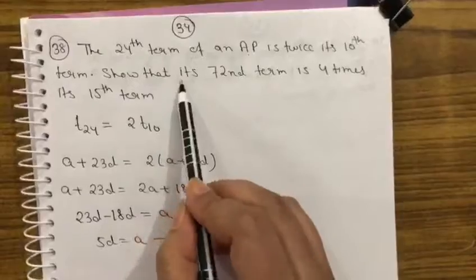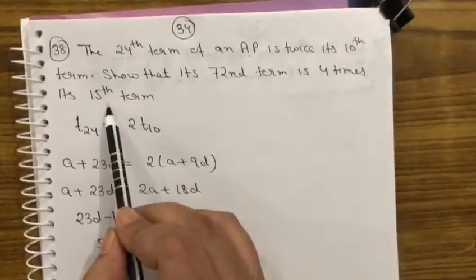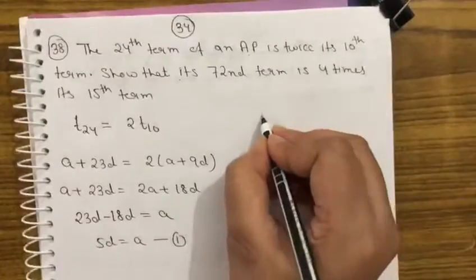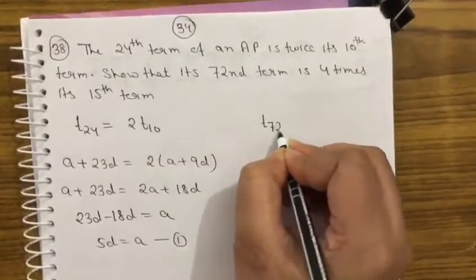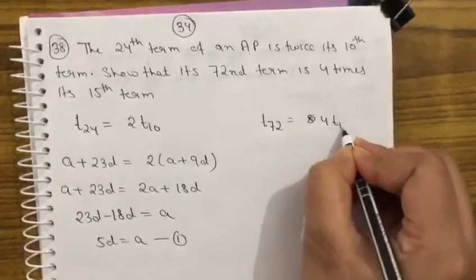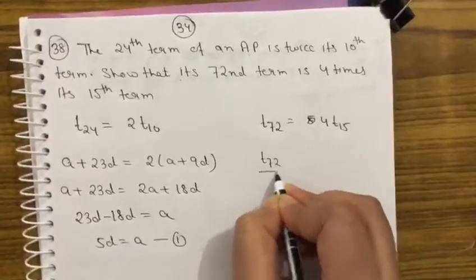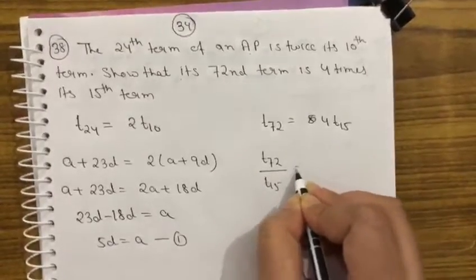Show that its 72nd term is 4 times its 15th term. T72 is 4 times its 15th term. So if we see T72 upon T15, find it. This value is 4.